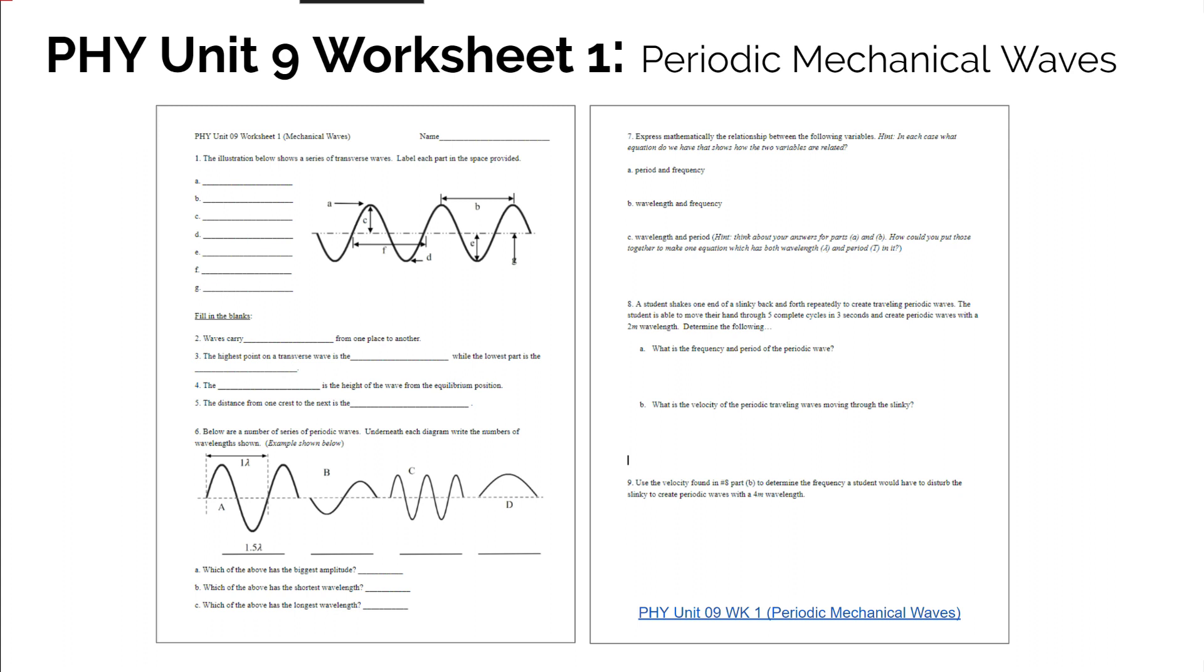Now you should be able to work your way through the rest of this worksheet, Unit 9 Worksheet 1, thinking through how to classify different parts of a periodic mechanical wave and use this equation to figure out wavelength, wave speed, or frequency.